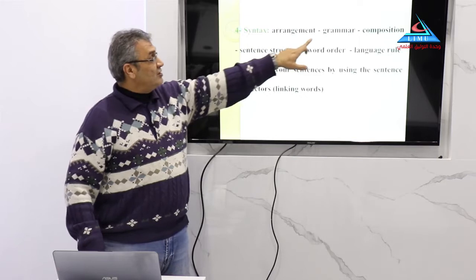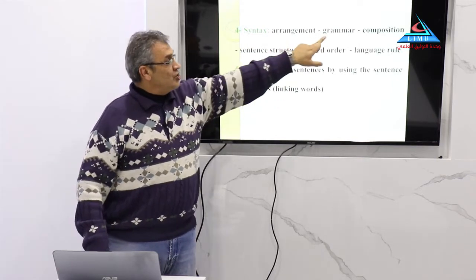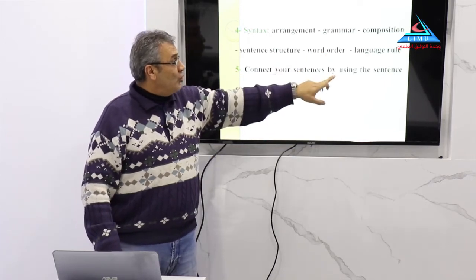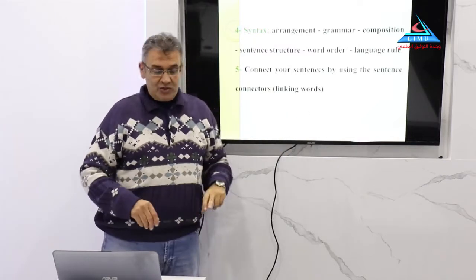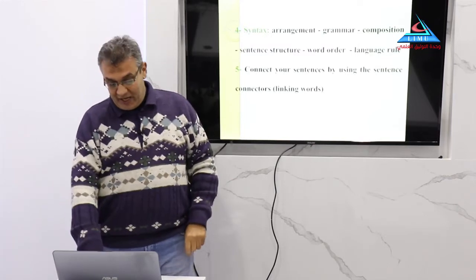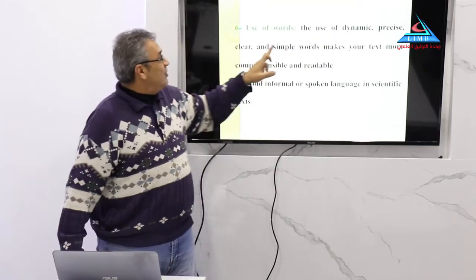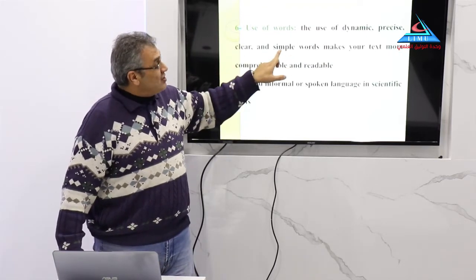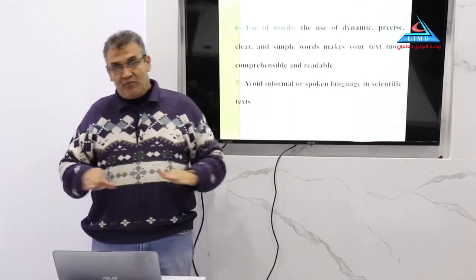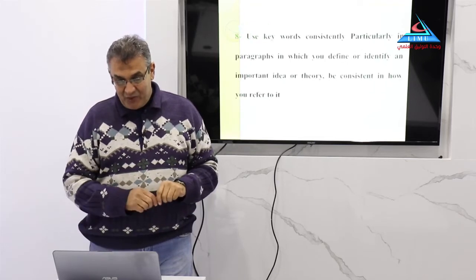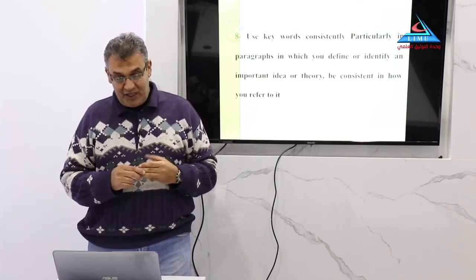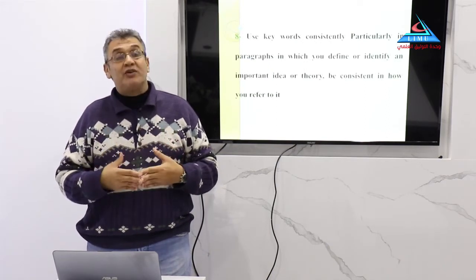Regarding arrangement — syntax, grammar, composition, sentence structure — the sequence of information is important, including word order, language rules, and use of linking words. Linking words are a great weapon in academic writing. Use words that are dynamic, precise, clear, simple, and make your text more comprehensible and readable. Avoid any informal or spoken language in scientific texts. Using keywords is important, particularly in paragraphs where you define or identify an important idea or theory — be consistent in how you refer to it.